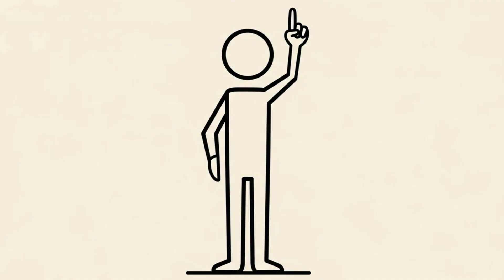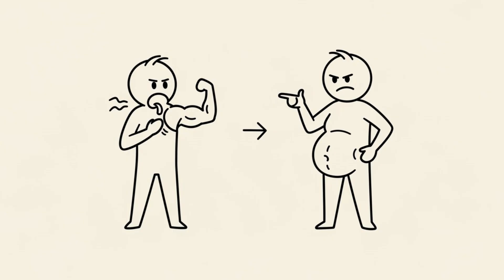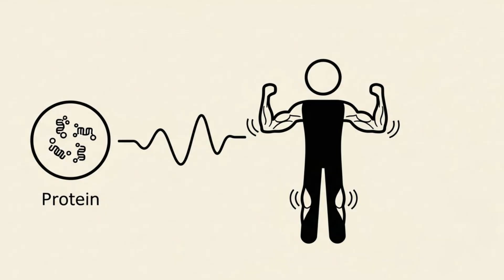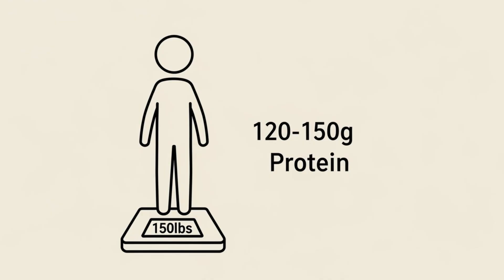Protein is non-negotiable. If there is one thing you take away from this video, let it be this. When you are in a calorie deficit, your body looks for energy. If you don't provide a reason for it to keep your muscle, it will eat your biceps before it eats your belly fat. Protein is the signal that tells your body, keep the muscle. We need this. The current literature suggests aiming for 0.7 to 1 gram of protein per pound of body weight. So if you weigh 150 pounds, you need to aim for roughly 120 to 150 grams of protein daily.